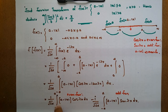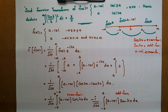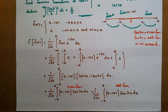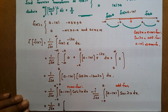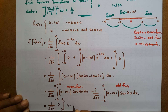This simplifies to 1 by root 2π into 2 times the integral from 0 to a of (a - x) into cos λx dx.